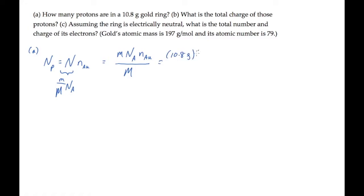The ring's mass times Avogadro's number times the atomic number, the number of protons per atom, divided by the molar mass, the mass per mole. When you calculate, it works out to this very large number.